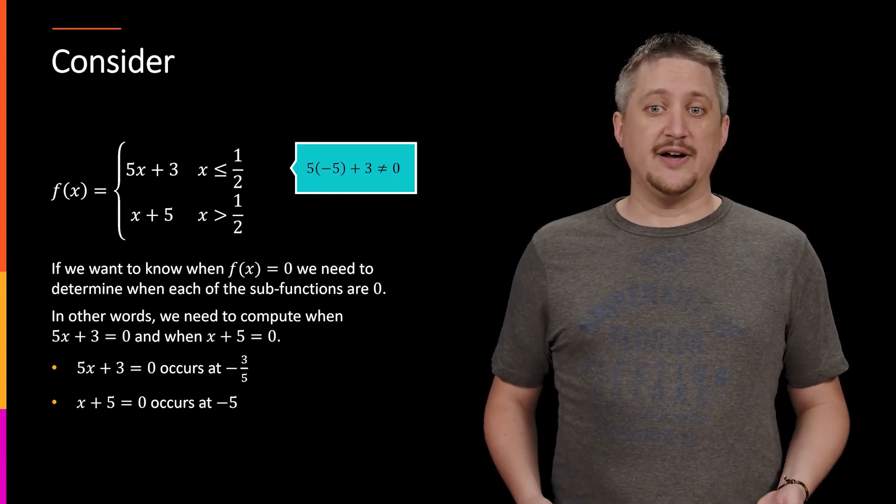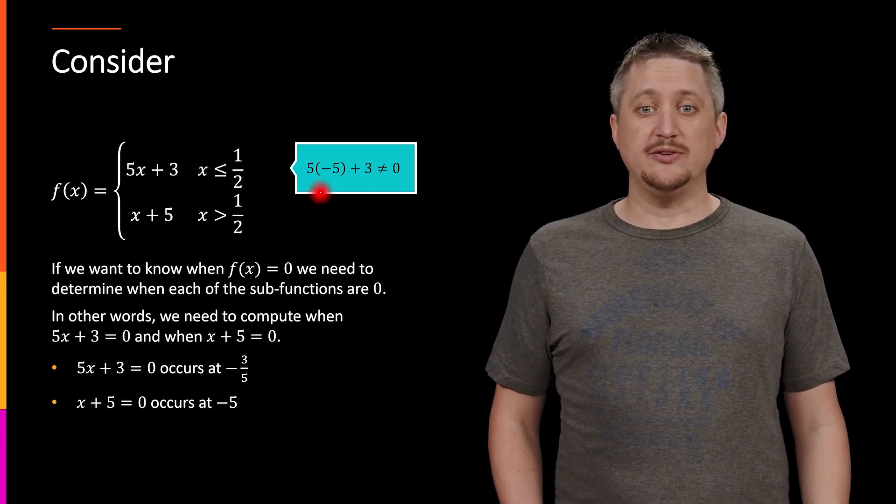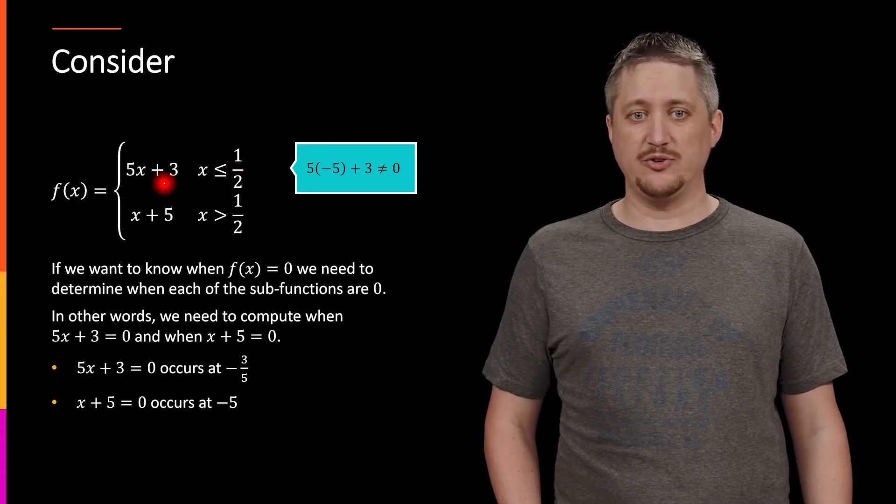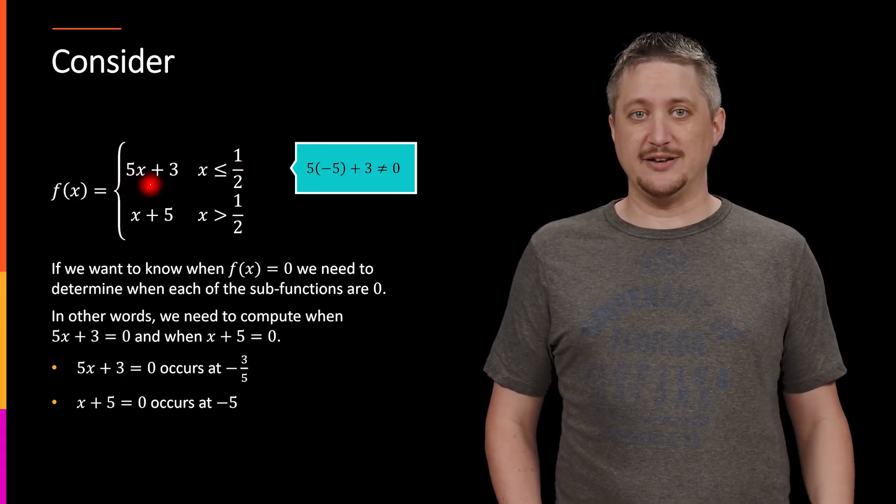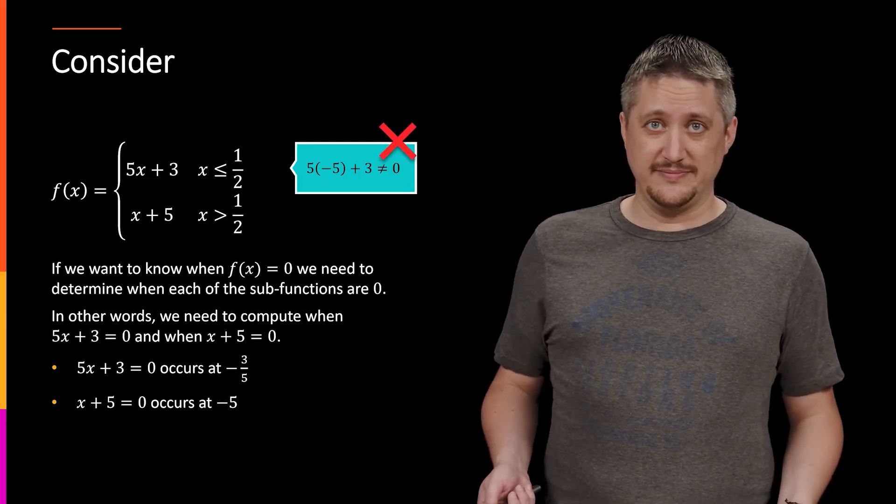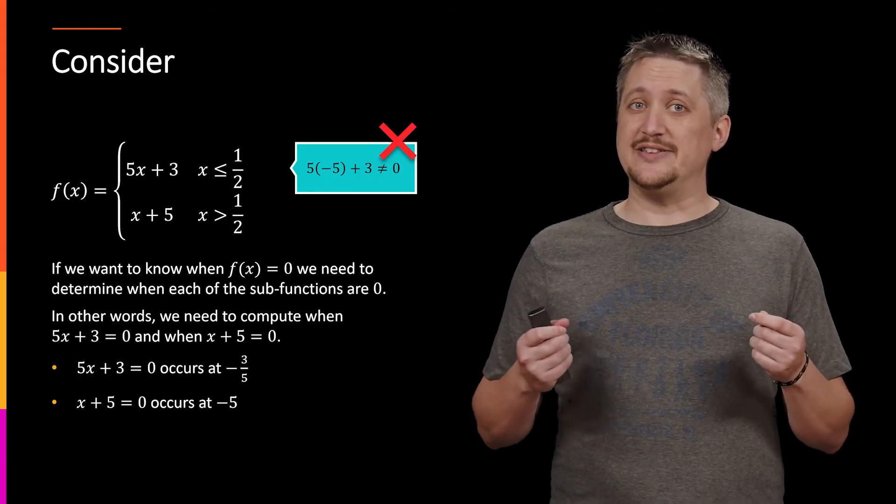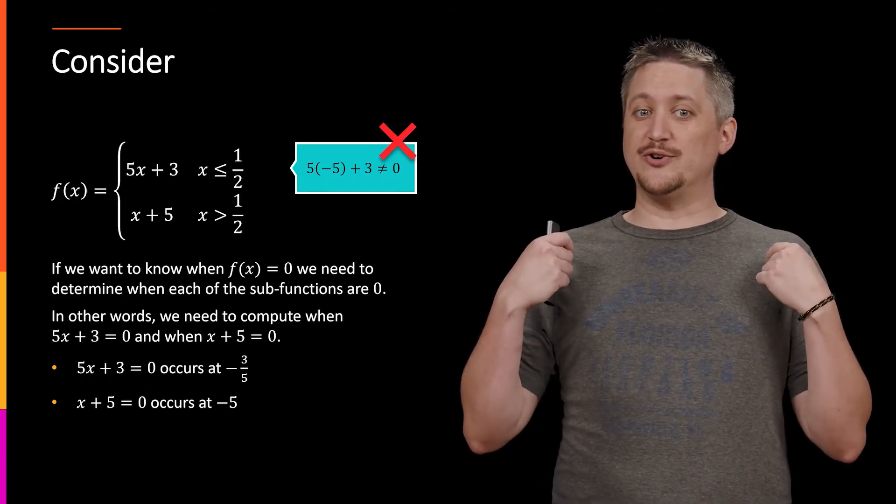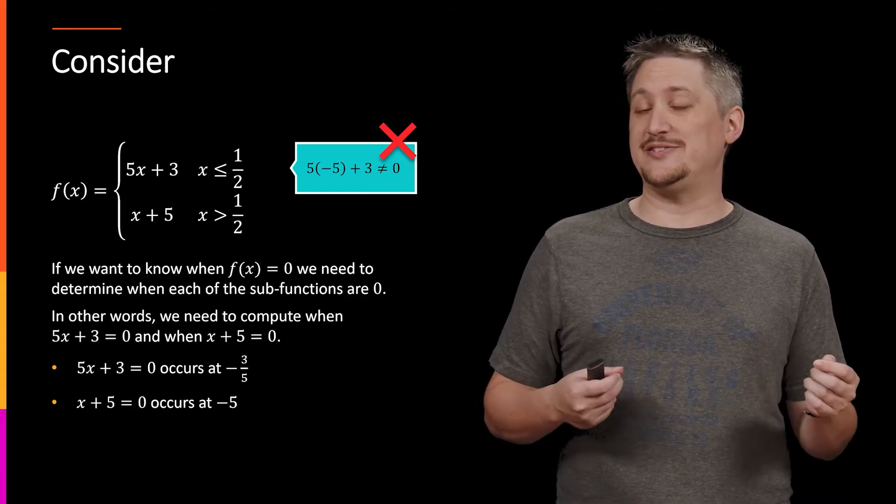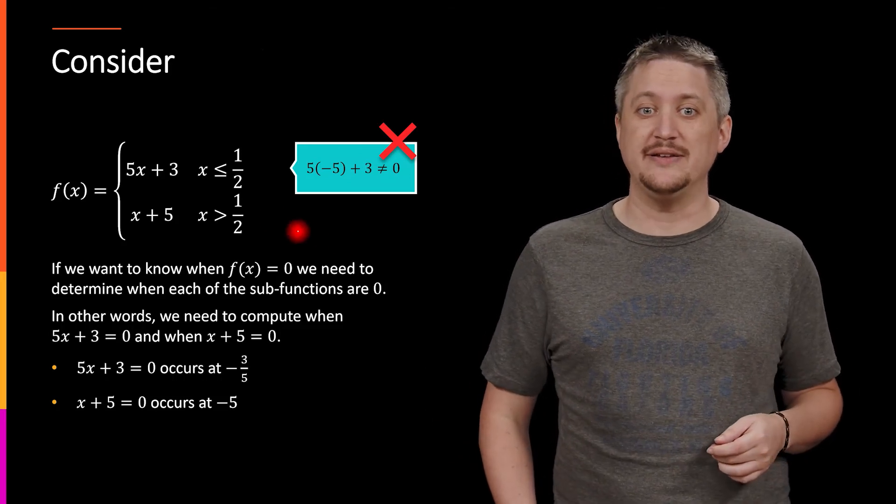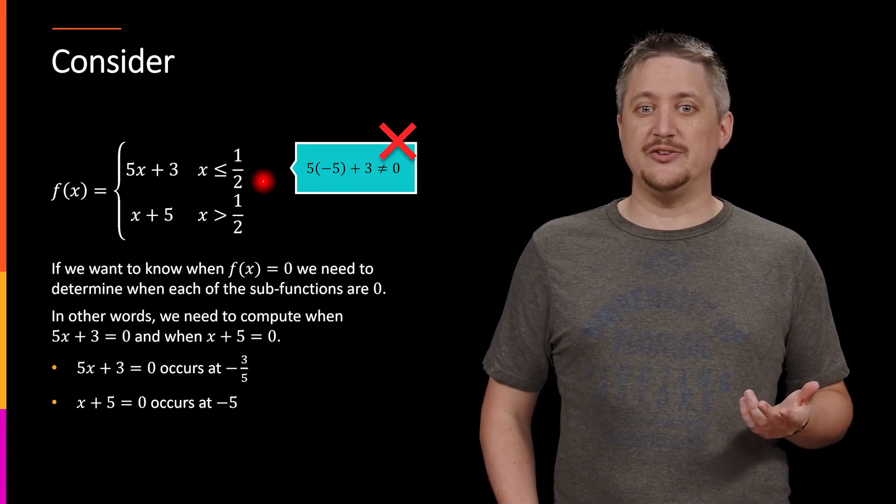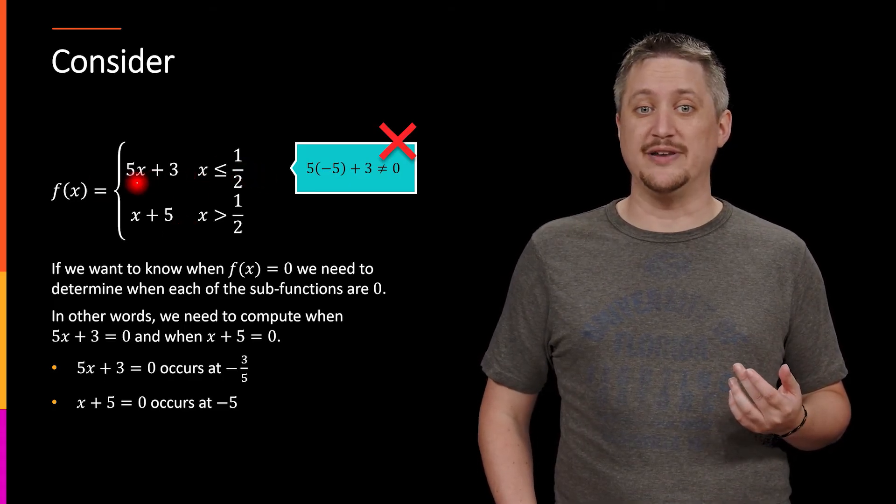Then we would check the other one, -5. Well, we would do the same deal. We'd say, is -5 less than or equal to 1/2 or greater than 1/2? It's less than 1/2, so we'd plug it into this top function. But 5 times -5, that's -25 plus 3, definitely not zero. And so that is not a solution. So the key here is that when we plug it back in, we have to check to see which function it lands in. Because the reason it's going to be not a solution is that it's basically landing in the wrong sub-function according to its domain. We got the -5 as a solution from the second one, but when we tried to plug it in, the domain said that it would go and be computed in the first one, and that's why it didn't work.